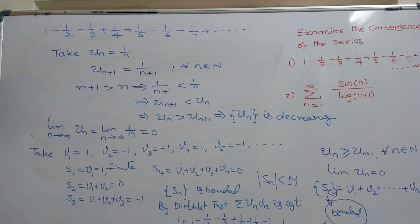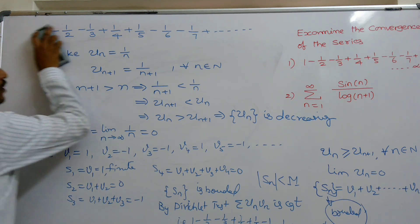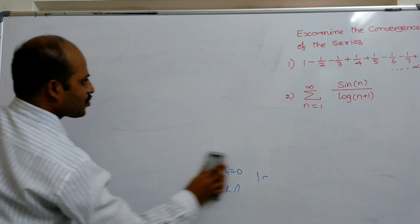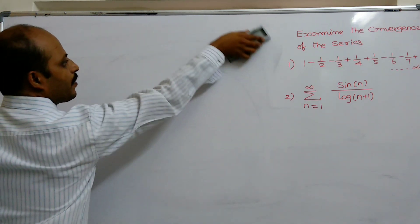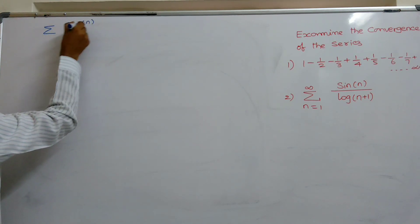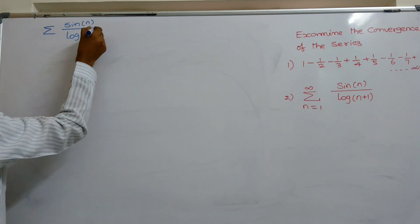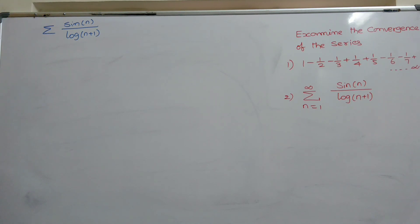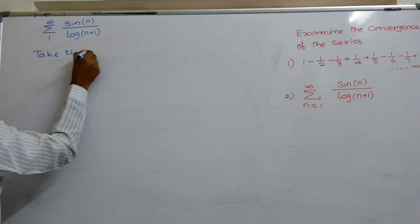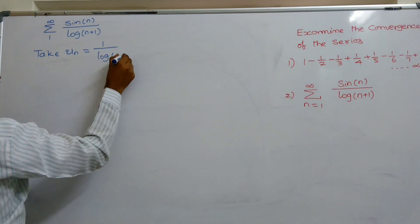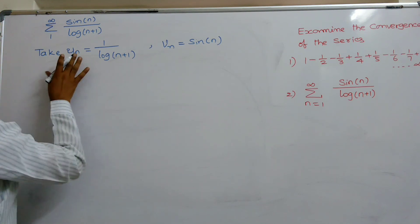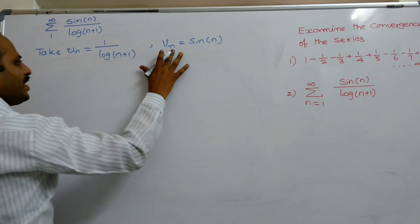Next we solve the second problem. The given infinite series is the summation from N equals 1 to infinity of sin(N) divided by log(N+1). Take UN equals 1/log(N+1) and VN equals sin(N).